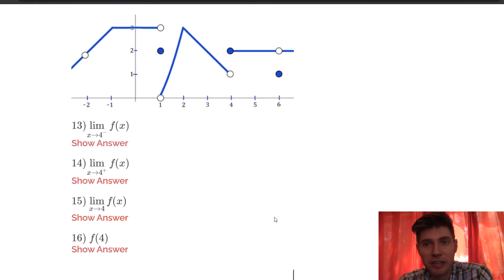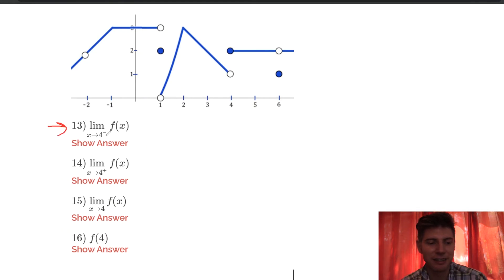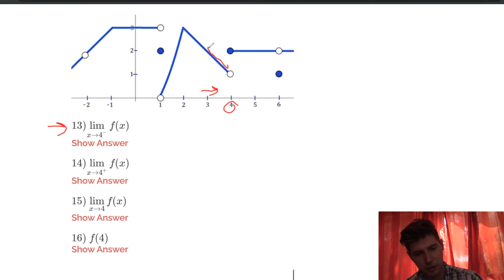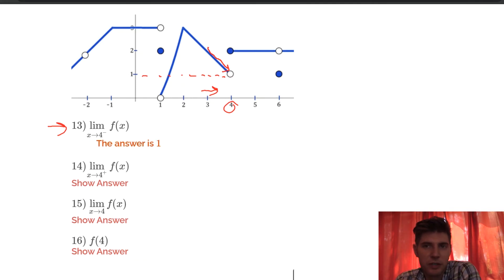Same graph again, but now we're approaching 4 from the left, from the right, the limit itself, and then the function value at 4. Number 13: the limit as x approaches 4 from the left. Here's 4, and approaching from the left means going down this ramp. The y value is approaching 1, so the limit from the left is 1.